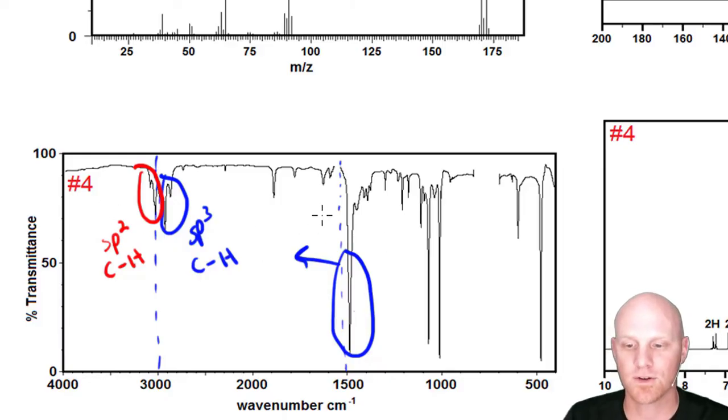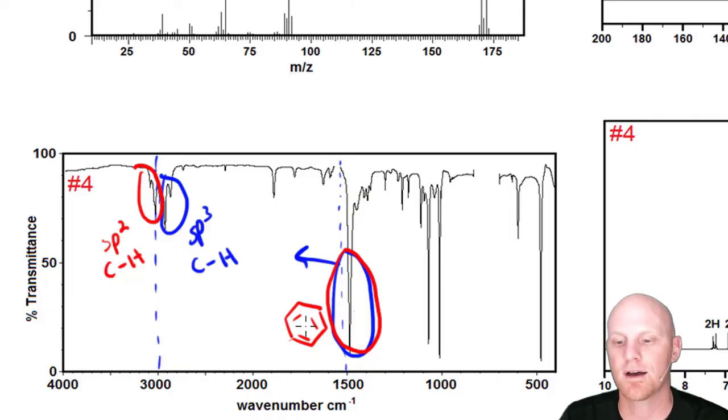We don't have a signal of any significant strength around 1650, so we don't think alkene. But we do have this signal right here. From a little less than 1500 to a little more than 1600, you might have 1, 2, or 3 peaks—that's your evidence of a benzene ring, an aromatic compound. Even if we weren't completely positive with a benzene ring here, the NMRs will definitely clue us in.